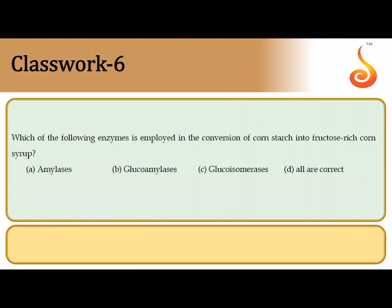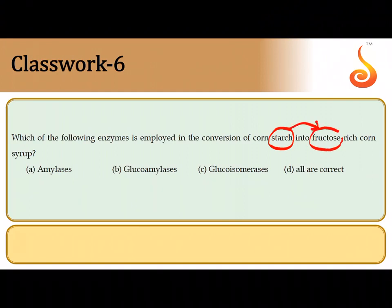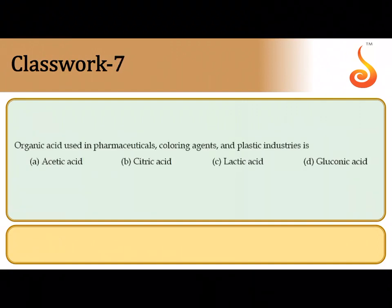The sixth question asks which enzymes are employed in the conversion of corn starch to fructose-rich corn syrup. You are converting a polysaccharide — starch — into a monosaccharide, fructose. Starch is composed of glucose, and you also need to isomerize glucose into fructose. So you will need amylases, glucoamylases to obtain glucose residues, and isomerases to obtain fructose. All of them are correct options.